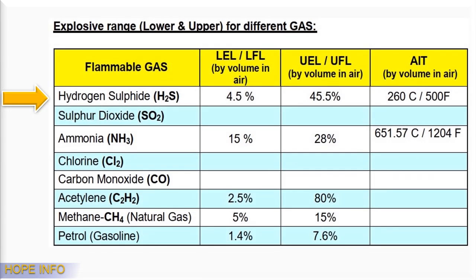Explosive range — lower and upper — for different gases: Hydrogen sulfide (H2S): LEL 4.5%, UEL 45.5%. Sulfur dioxide (SO2). Ammonia (NH3): LEL 15%, UEL 28%. Chlorine (Cl2). Carbon monoxide (CO). Acetylene (C2H2): LEL 2.5%, UEL 80%. Methane (CH4) or natural gas: LEL 5%, UEL 15%. Petrol or gasoline: LEL 1.4%, UEL 7.6%.